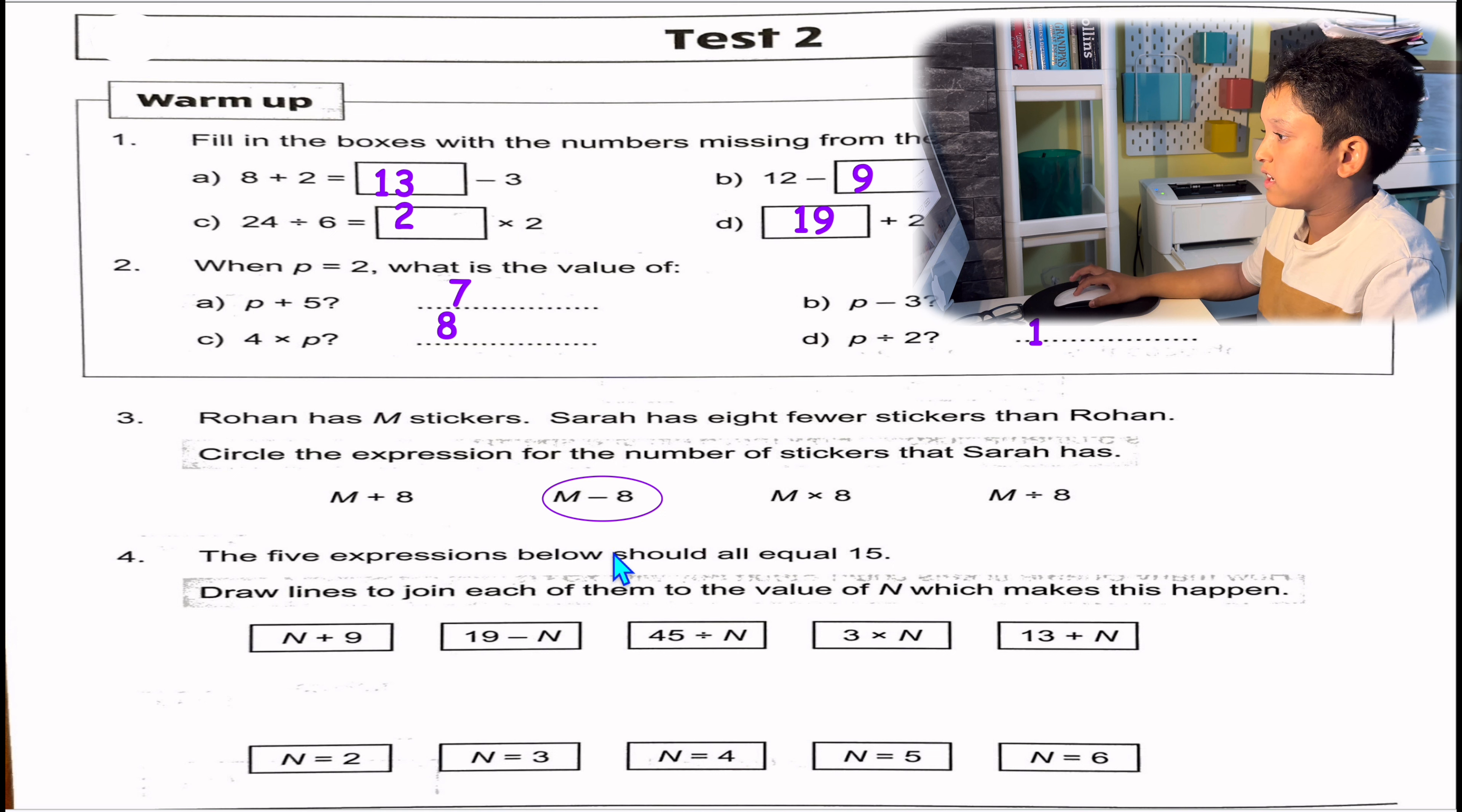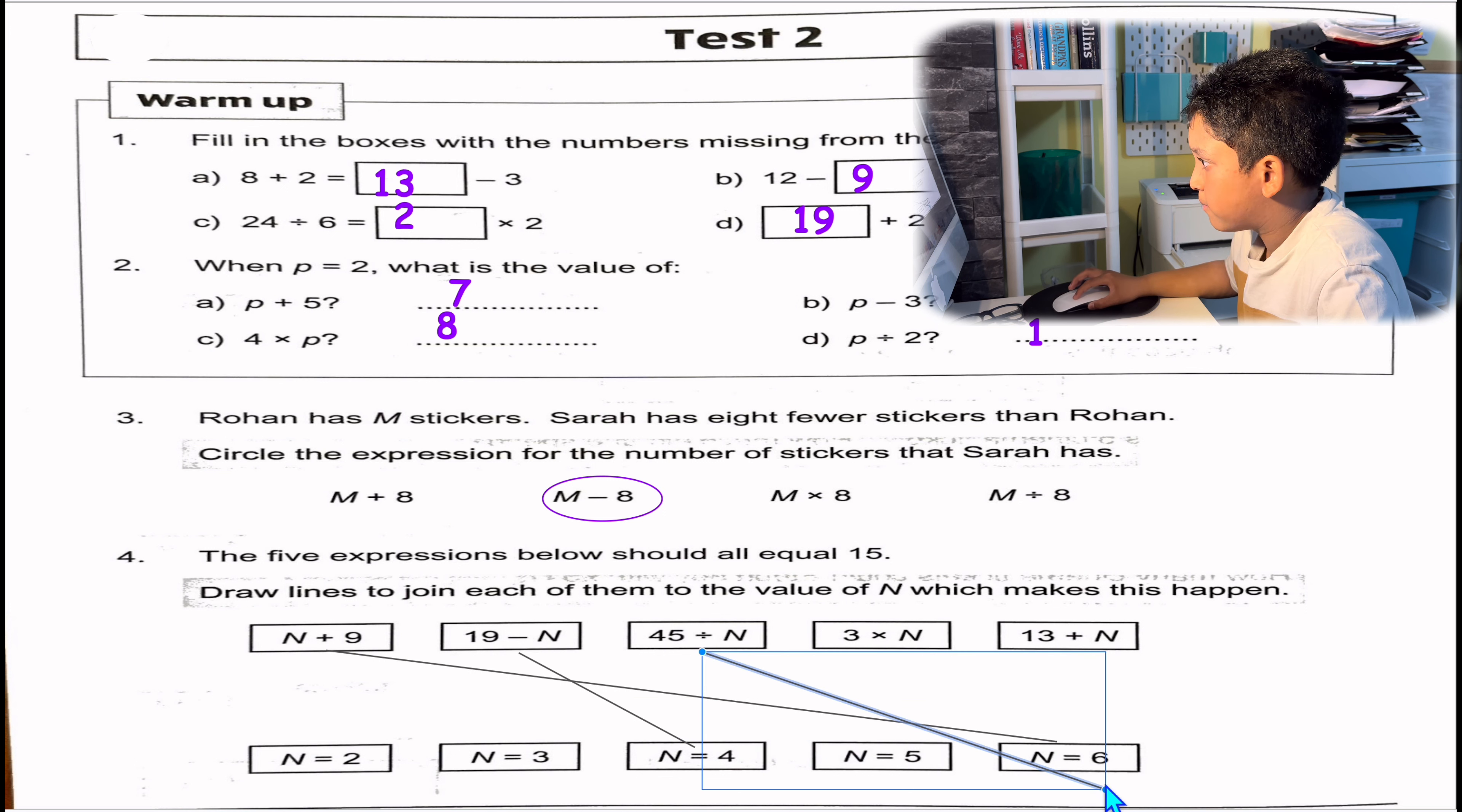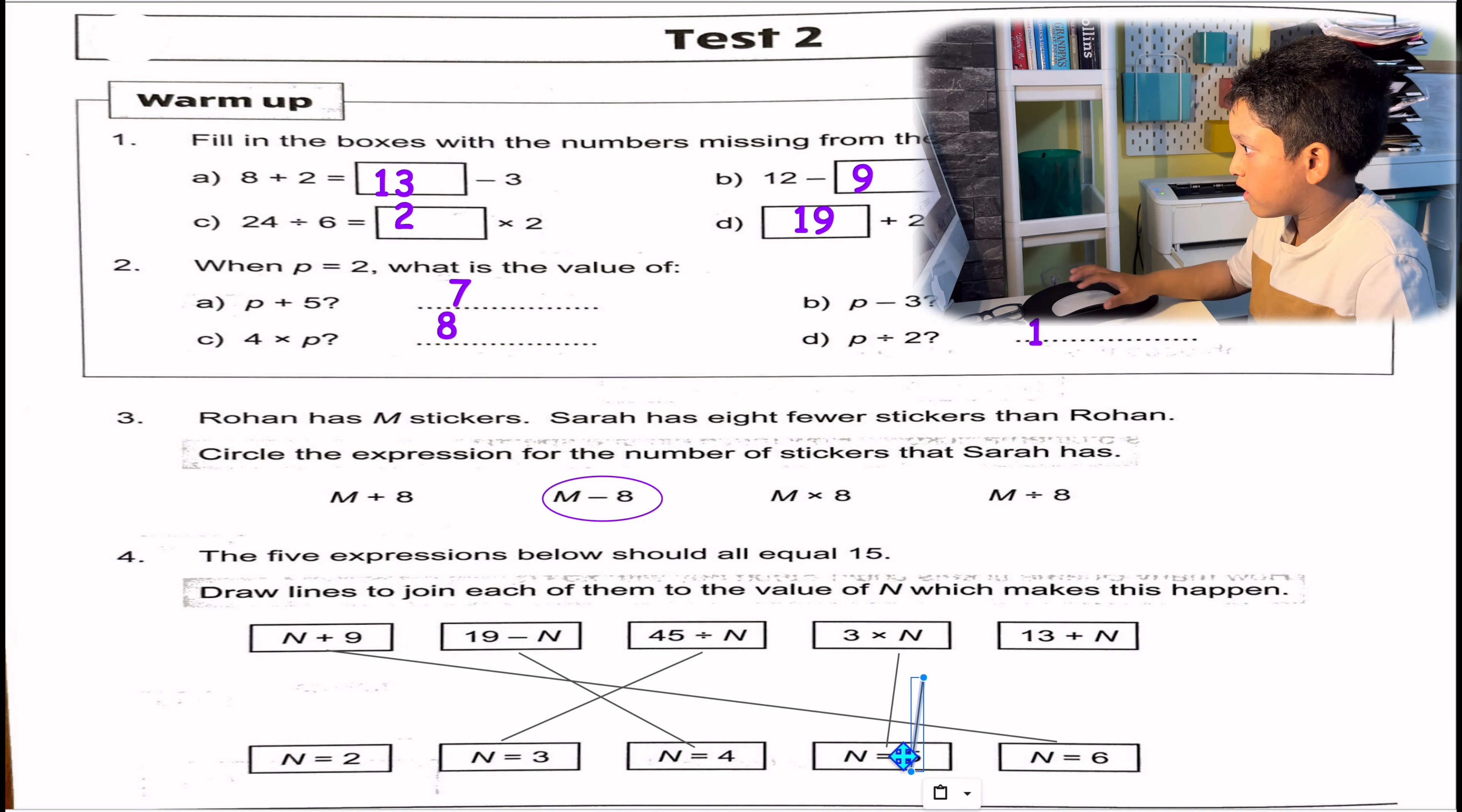Question 4: The 5 expressions below should all equal 15. Draw lines to join each of them to the value of N which makes this happen. So let's start from N plus 9. If we need 15, it will be 6. 19 take away N, that will be 4. 45 divided by N, that will be 3, because 45 divided by 3 is 15. 3 times N, that will be 5. And the last one is the last one.